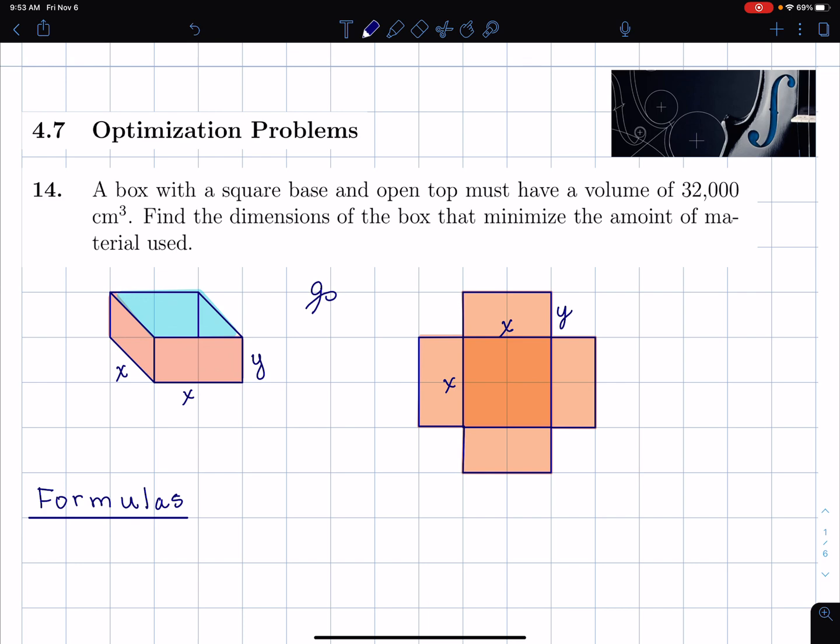So I have x by x for the side of the square base, and then I have a height y. Now we're going to find the dimensions of the box that minimize the amount of material used. To show that amount of material used, I've cut the box open.